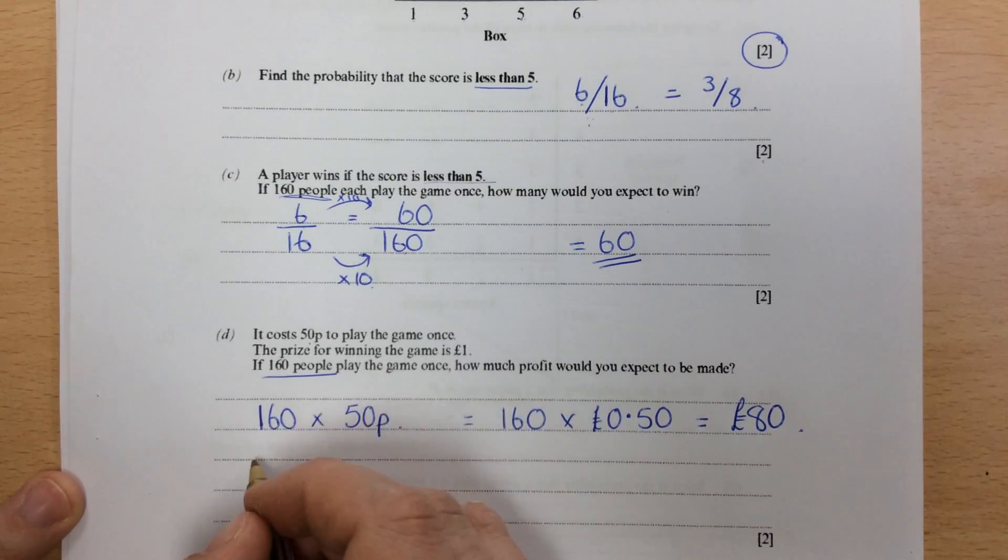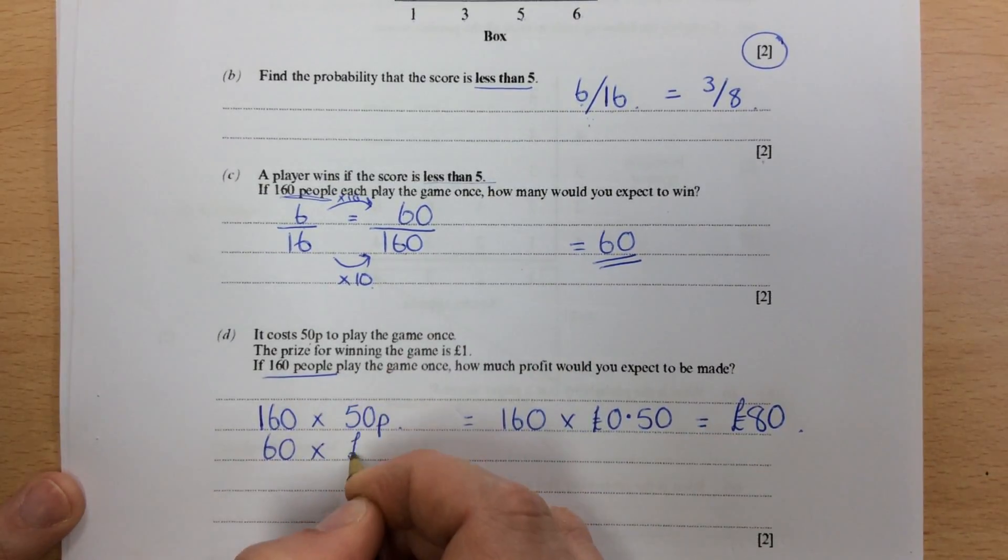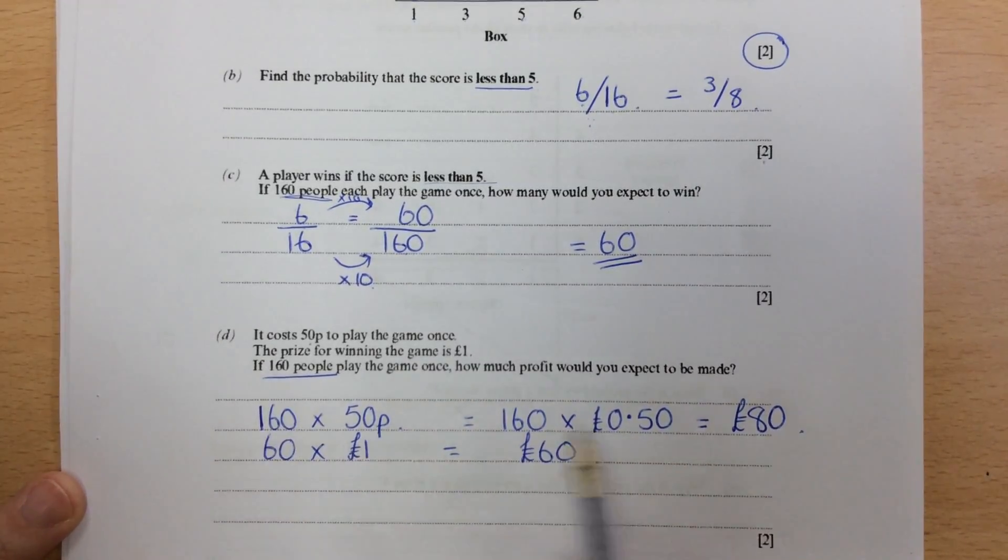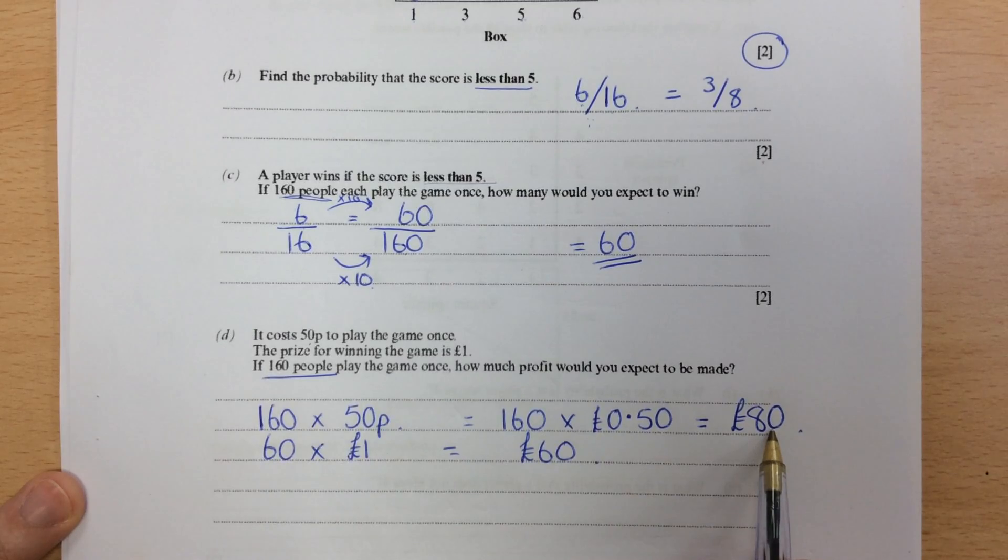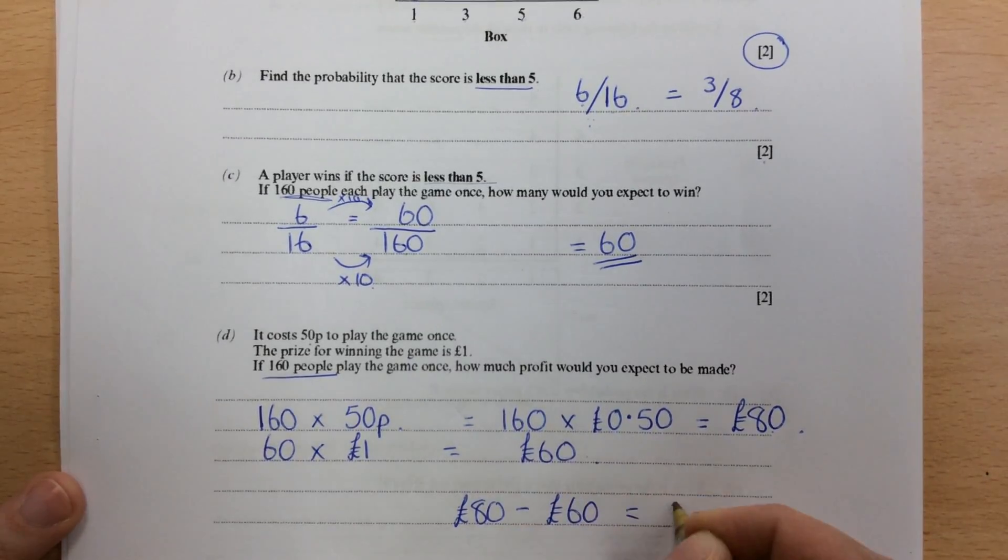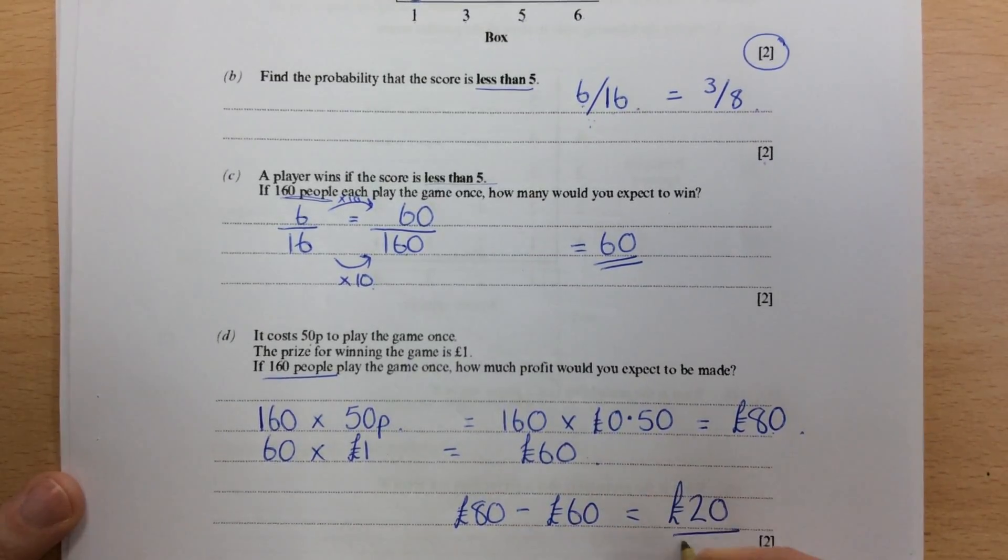One pound if they win. Now we expected 60 people to win. So 60 times a pound is 60 pound. So they've earned 80 pounds, but they've spent out 60 pounds in winnings. So we've got 80 take away the 60 pound, which gives you a 20 pound profit for that game.